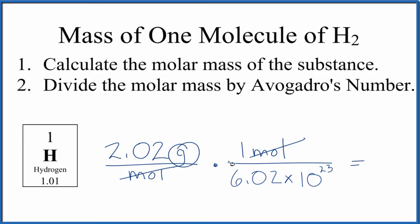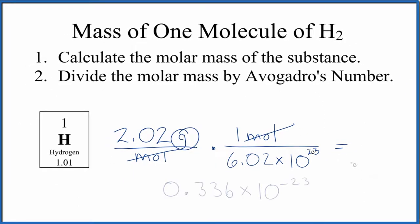So 2.02 divided by 6.02 times 10 to the 23rd, that equals 0.336 times 10 to the negative 23rd. And remember the units, that's going to be grams.